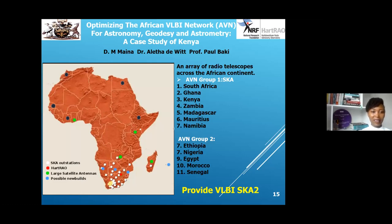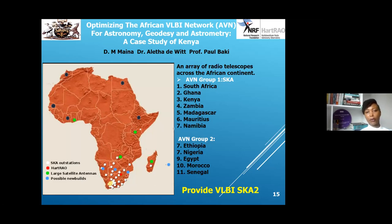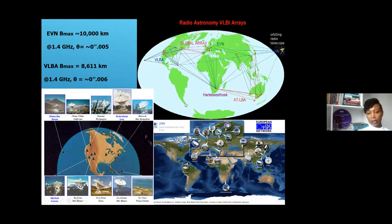This is the work I did for my master's thesis, where we tried to look at the impact that a possible group of antennas on the African continent could have on the global VLBI network. As shown on the map, any telescopes across Africa would be very useful in these global arrays.